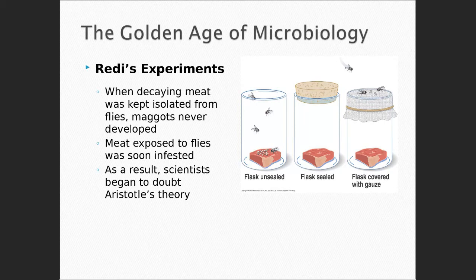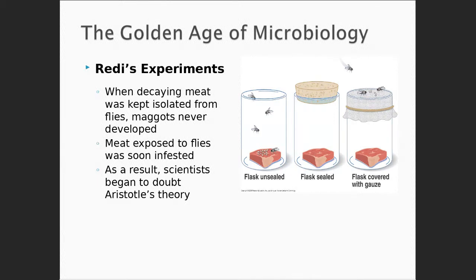Somebody tell me how the protozoans are classified. They're single-celled eukaryotes, similar to animals in nutrient needs and cellular structure. True, but how are they classified — what characteristic do we use? The way they move. Motility. Very good.